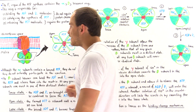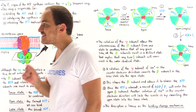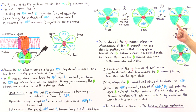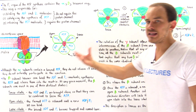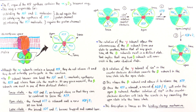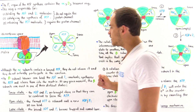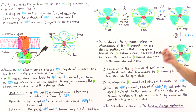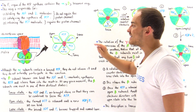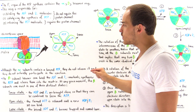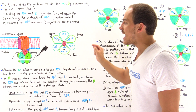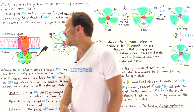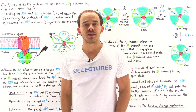In the next lecture, we'll focus on what causes the gamma unit to actually rotate — specifically, the rotation of the C ring in the F0 region of the ATP synthase molecule, and why that ultimately allows ATP to be released when the beta subunit enters the Open state.